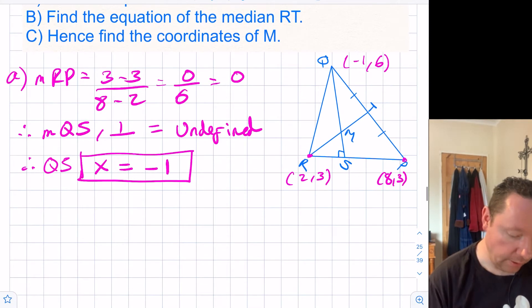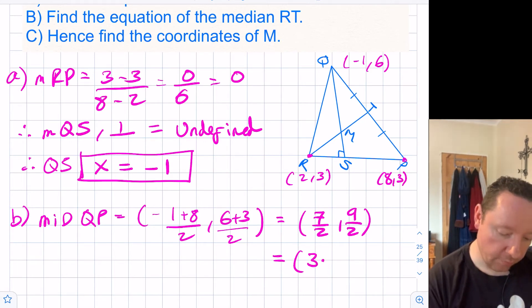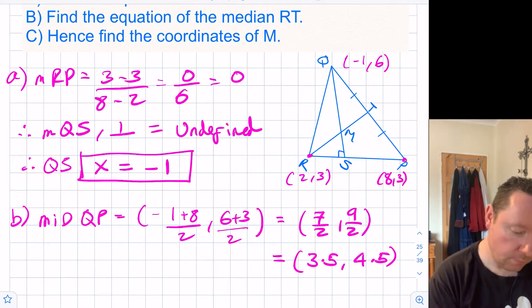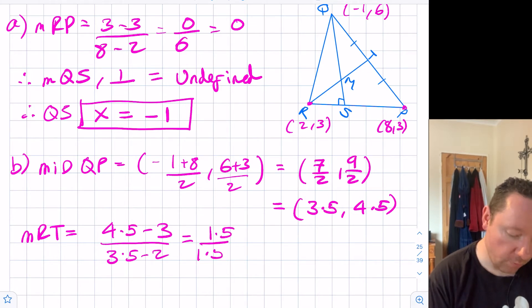Find the equation of the median RT. We need the midpoint of Q and P. The midpoint is -1 plus 8 divided by 2, and 6 plus 3 divided by 2. That gives us 7 over 2 and 9 over 2, or 3.5 and 4.5 in decimals, just because it'll be easier to see the gradient. We now need the gradient between R and our midpoint, which is called t. The gradient of R to t is 4.5 minus 3 over 3.5 minus 2. That's 1.5 on top and 1.5 on bottom, so our gradient is just 1.